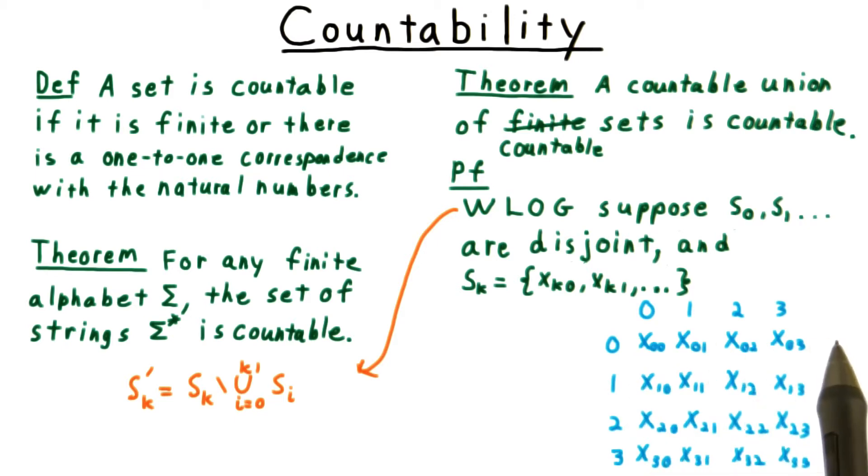Again, we can't go row by row here because we might never finish the first row if S_0 is infinite. On the other hand, we can go diagonal by diagonal since each diagonal is finite.